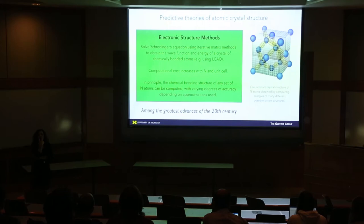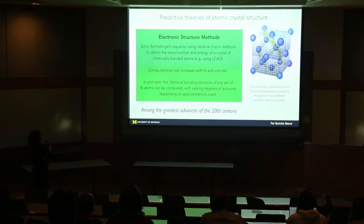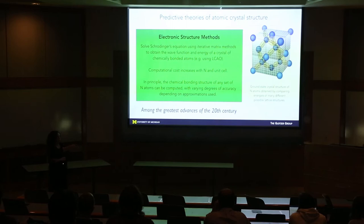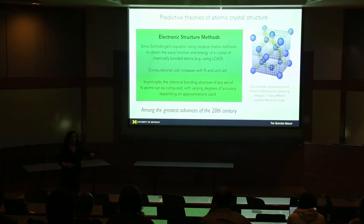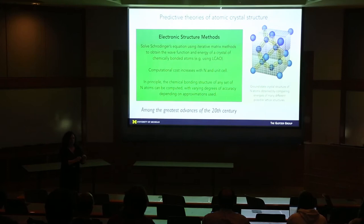Among the greatest advances of the 20th century is the ability to have predictive theories of atomic crystal structure based on electronic structure methods, of which Professor Panellini is among the world's experts. In these electronic structure methods we solve Schrödinger's equation using iterative matrix methods. Given some element, you want to know how those atoms arrange in their ground state — what's their preferred crystal structure. You set them up and describe each atom by a nucleus surrounded by an electron cloud.